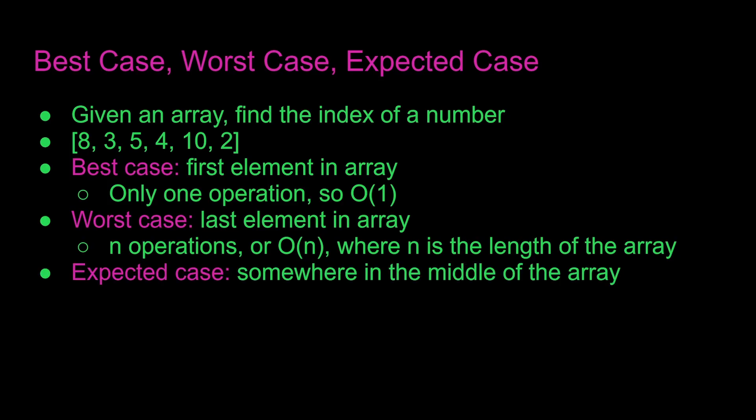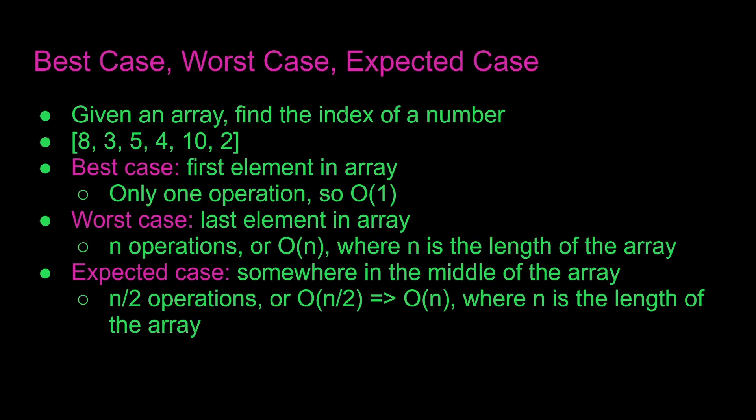And the expected case is somewhere in the middle of the array, because most numbers would be somewhere in the middle. This is n divided by 2 operations, or O(n/2), which simplifies down to O(n), where n is the length of the array. We'll cover how we can simplify from O(n/2) to O(n) in just a second.